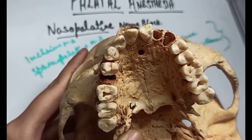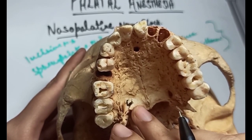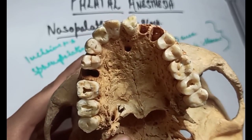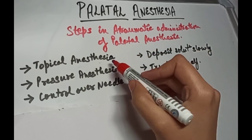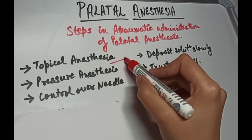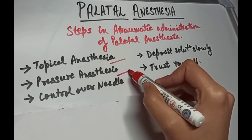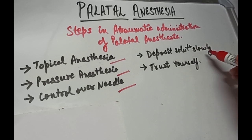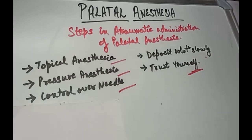Complications of the nasopalatine nerve block include hematoma formation, which is extremely rare due to the density and firm adherence of palatal soft tissues to the bone, and necrosis of soft tissues, possibly with highly concentrated vasoconstricting solutions. To provide less discomfort during palatal anesthesia: provide adequate topical anesthesia at the site of injection; use pressure anesthesia both before and during insertion and deposition; maintain control over the needle; deposit anesthetic solution slowly; and most importantly, trust yourself that you can complete the procedure atraumatically.